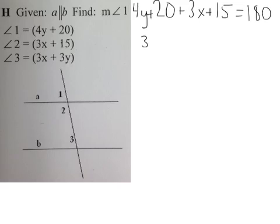Now I can rearrange. I get 3x plus 4y equals, and when I add 20 and 15 together I get 35. Subtract that from 180 and I get 155. So that's one equation.